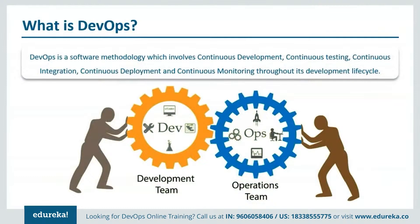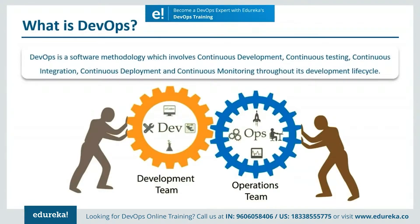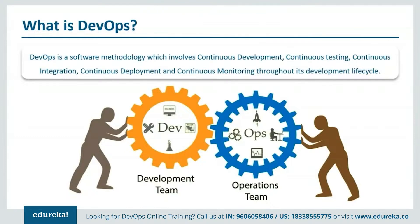Starting with today's session, let me first brief you on DevOps. DevOps is basically a software development strategy which bridges the gap between the dev side and the ops side of the company. In simple words, DevOps is a software methodology which involves all the steps from continuous development, continuous testing, continuous integration, continuous deployment, and continuous monitoring throughout its development lifecycle — building, testing, compiling the code, and finally putting it onto the production servers.